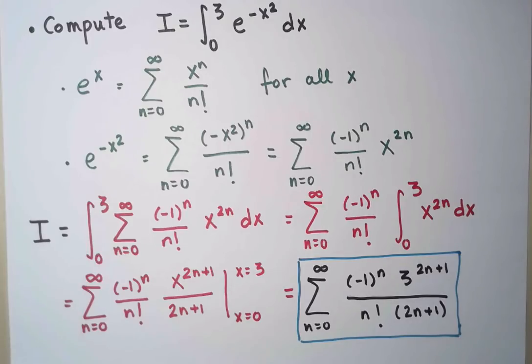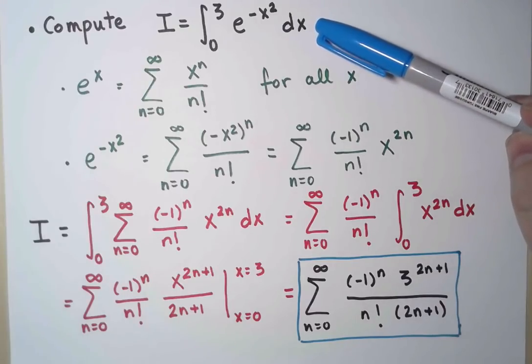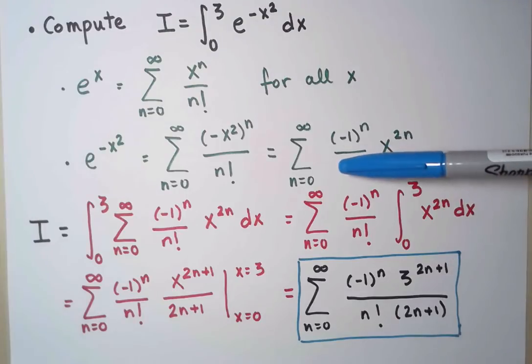In fact, if you ask your calculator or your computer to calculate this value, then this is exactly what it does. It replaces the function with a power series, then it integrates it term by term, gives the result as a series, and then approximates the infinite sum with a finite sum, with a partial sum.